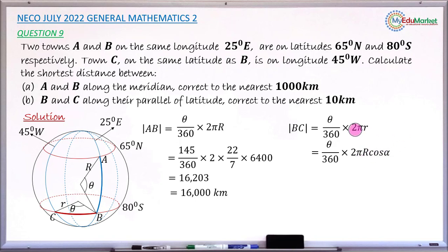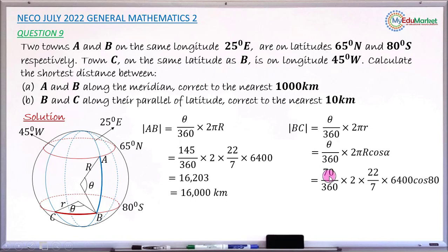Now substitute theta, pi, R, and alpha into the formula. The theta is the difference in longitude: town B is at 25°E and town C is at 45°W — different hemispheres, so we add them: 25 + 45 = 70 degrees. Substituting: 70/360 × 2 × (22/7) × 6400 × cos(80°).